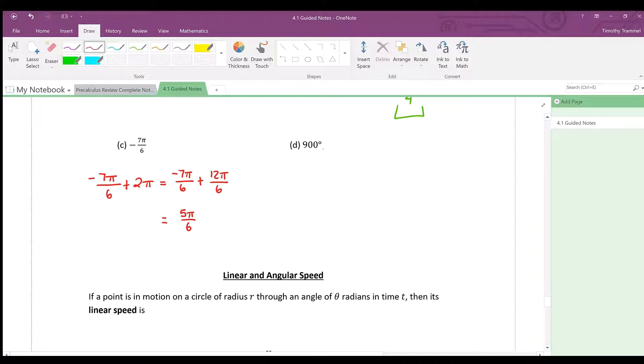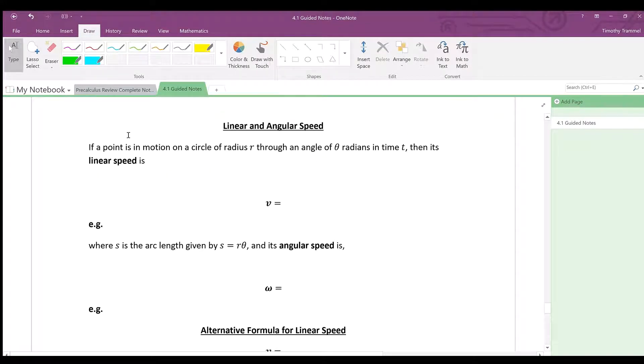Now let's give part D a try. This is a lot bigger than 360, and I think subtracting just a single 360 isn't going to get us between 0 and 360, so let's try 2. If 2 is not enough, we'll try 3. We have 900 minus 360 times 2, and that's going to leave us with 180. This brings us to our last topic: linear and angular speed.